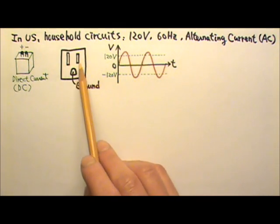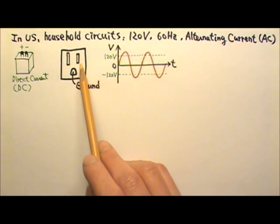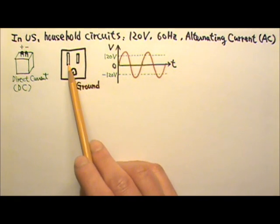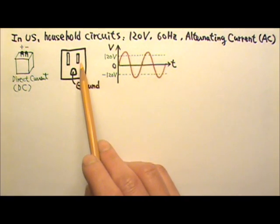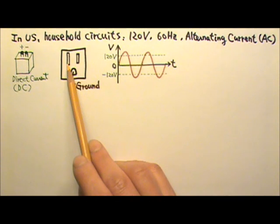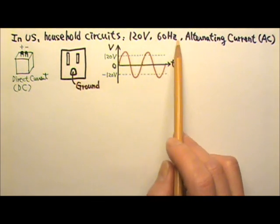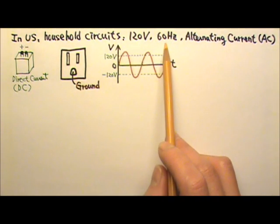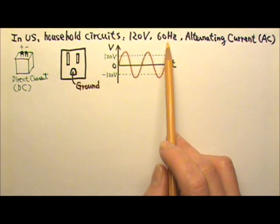for alternating current, these two prongs at an outlet change polarity all the time. At one moment, this terminal has a higher potential than the other, the next moment it has a lower potential. This 60Hz means the polarity changes at the frequency of 60 times every second.